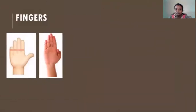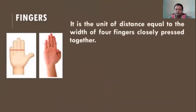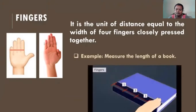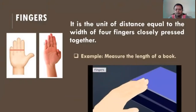Fingers is a unit of distance equal to the width of four fingers closely pressed together. As you can see in the picture, the four fingers are closely pressed, and that width is called fingers. For example, let us measure the length of a book using fingers. The length of this book is about four fingers.